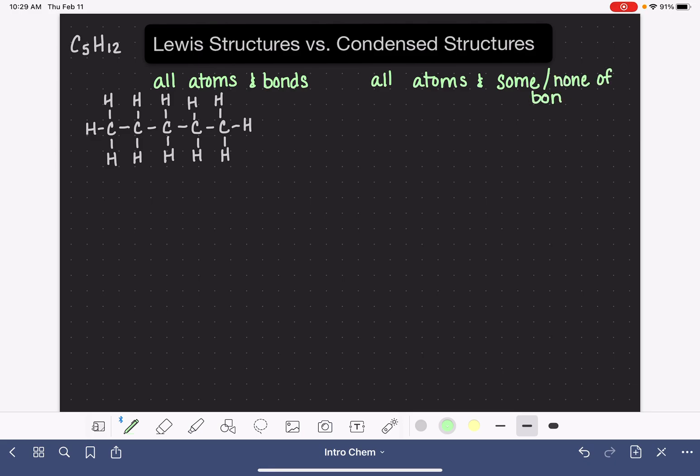How we draw a condensed structure is really up to us as a chemist. We get to choose which bonds we would like to leave out and which bonds we would like to show. So one example of taking this exact same molecule and showing it as a condensed structure, let's just say we want to show none of the bonds at all. And all that means is that we're just not going to draw these lines.